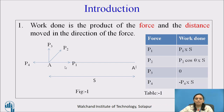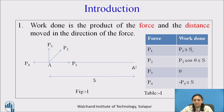We will see one by one what is the work done by each force. P1 is in the horizontal direction and it is in the direction of displacement. So, for the P1 force, work done is P1 into S. Now see the P2 force — P2 is not in the x direction, it is inclined at angle theta with horizontal. So the horizontal component is P2 cos theta and vertical component is P2 sin theta.